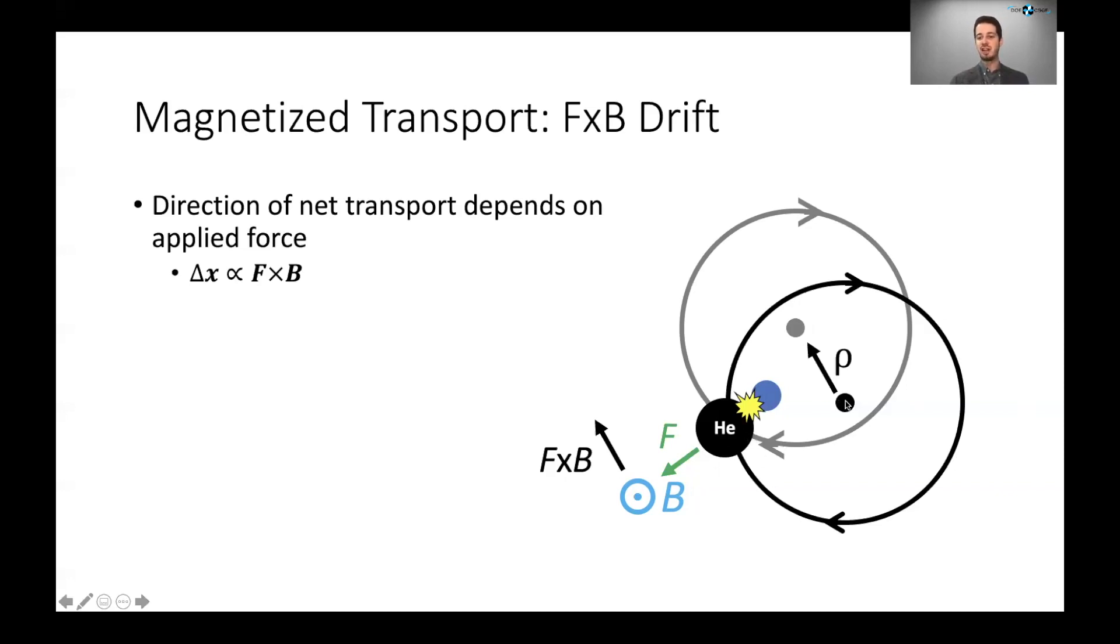But that isn't where the helium ion goes in terms of its magnetized transport. In fact, the gyro center moves in the direction given by the cross product of the force and the magnetic field. So you can do your cross product with your hand and see that this force goes in the F cross B direction. So in order to understand where the ions are going, we'll want to cross whatever forces we get from our thermal analysis with the magnetic field.